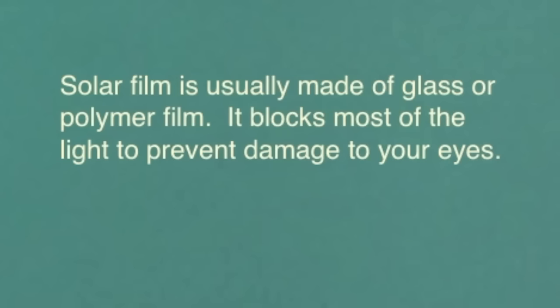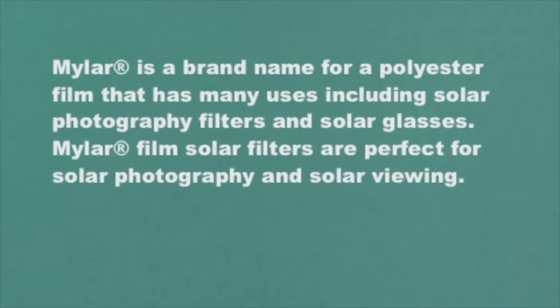Before we get started making our solar filter, I thought it might be a good idea to talk about solar film, what it is, and how important it is to buy good quality solar film to protect your eyes and equipment. Solar film is usually made of glass or polymer film and blocks most of the light to prevent damage to your eyes. Mylar is a brand name for a polyester film that has many uses, including solar photography filters and solar glasses.